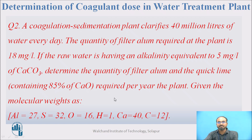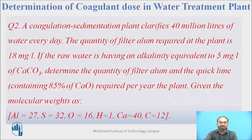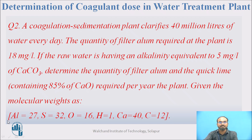The second numerical is relatively trickier. A coagulation sedimentation plant clarifies 40 MLD of water every day. The quantity of filter alum required is 18 mg per liter. Raw water has alkalinity equivalent to 5 mg/L as CaCO₃. Determine the quantity of filter alum and quick lime (85% purity) required per year. Given atomic masses: Al = 27, S = 32, O = 16, H = 1, Ca = 40, C = 12.